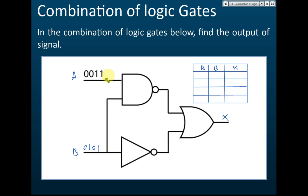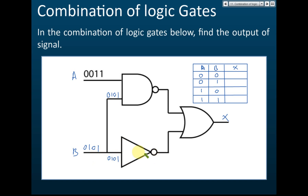The input values are zero, one, zero, one for one column. For input A we have zero, zero, one, one and for input B we have zero, one, zero, one. They may not give you the input directly on the circuit diagram, so you need to copy these values from the truth table and write them next to the gate inputs. Zero means no current, one means there is current flowing.